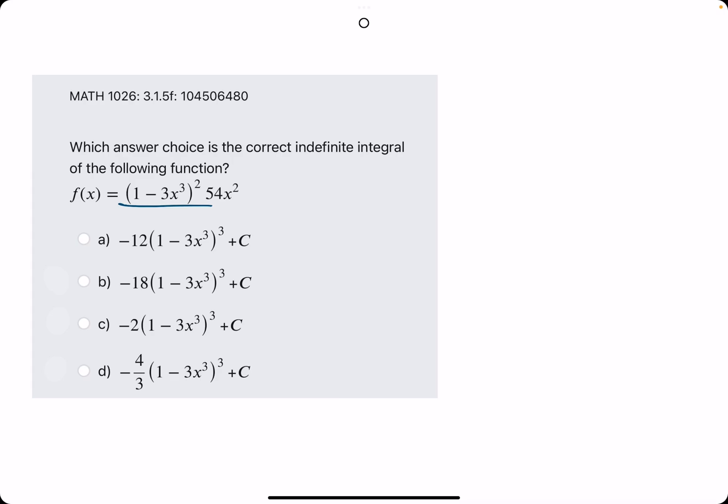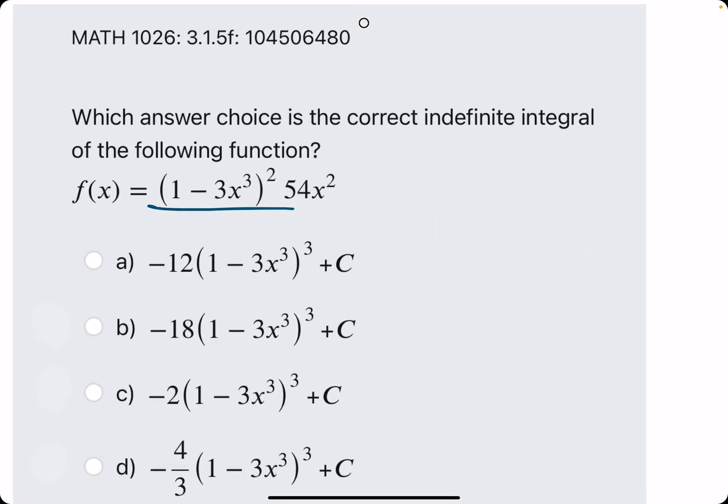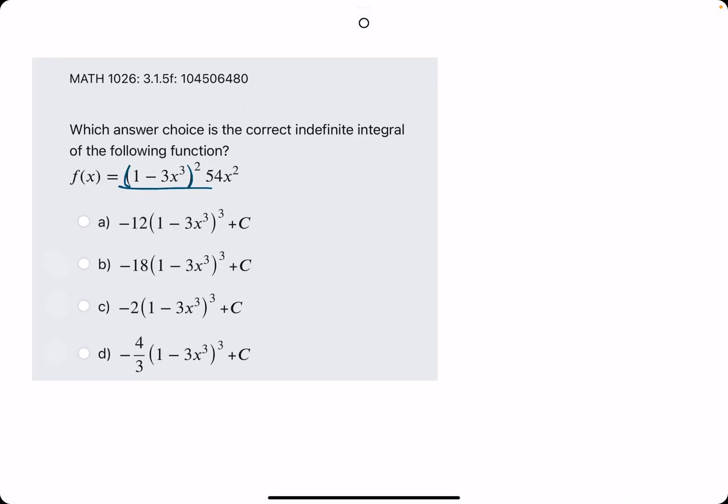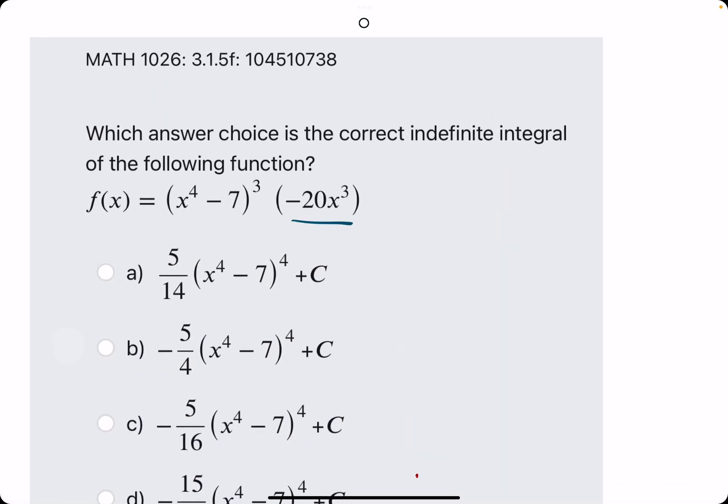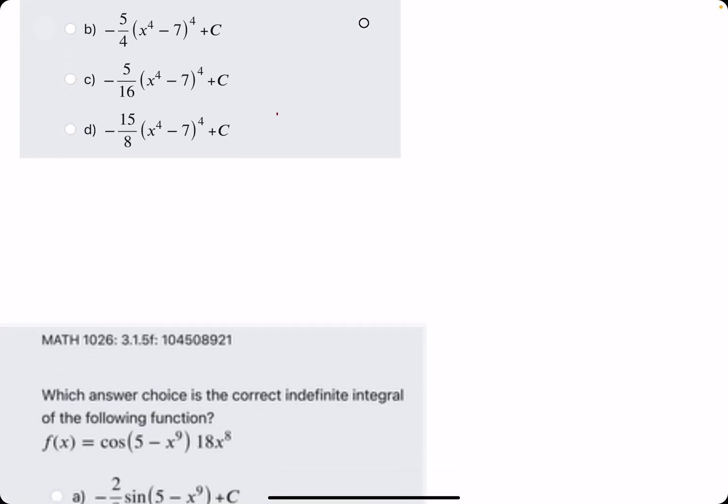In this one, we want to identify a u. We are going to use a method known as u-substitution. The u will simply always come from what's inside the parentheses being raised to another power, or being acted on by something else.